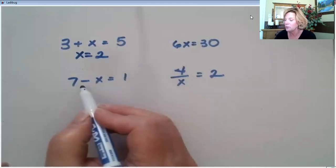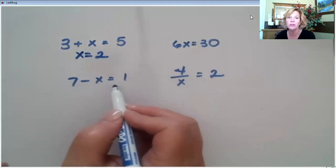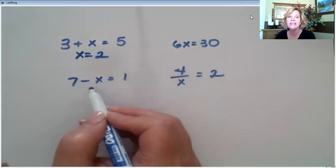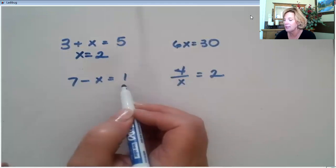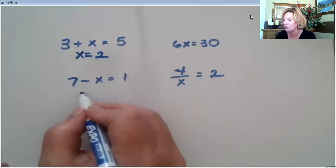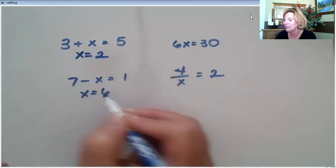Let's do a subtraction one. 7 minus x equals 1. What can we take away from 7 to leave us with 1? Again, you know x equals 6.